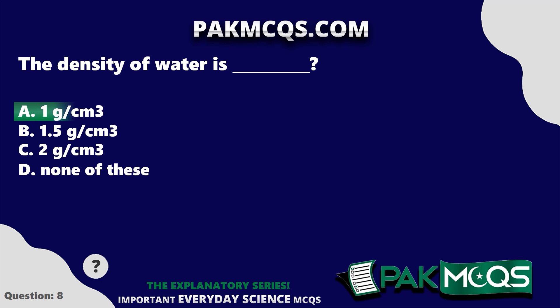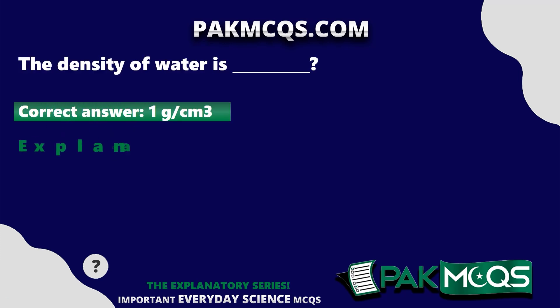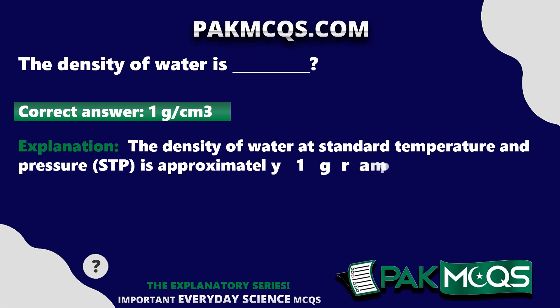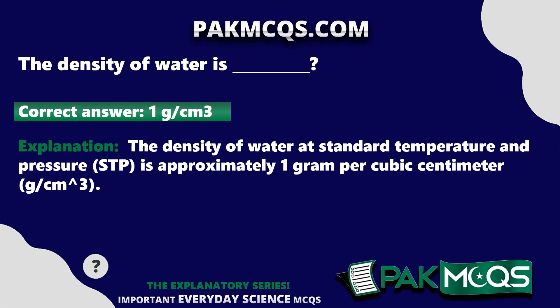The density of water is? One gram per cubic centimeter. The density of water at standard temperature and pressure (STP) is approximately one gram per cubic centimeter (g/cm³).